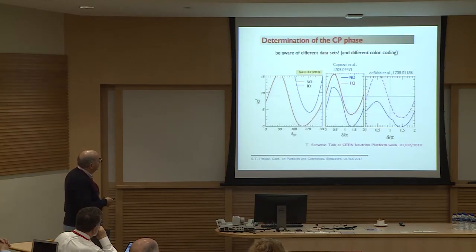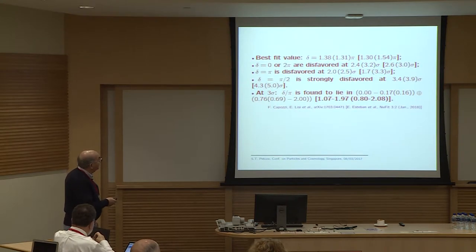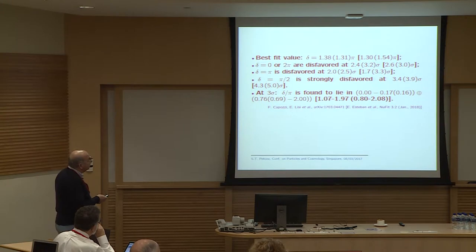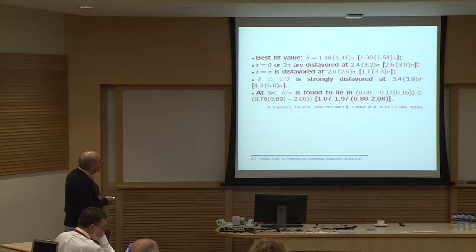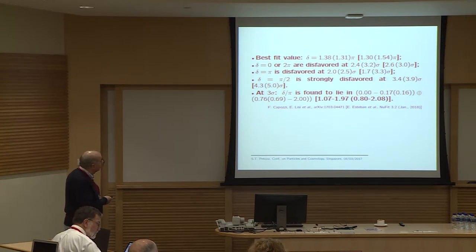The hint about δ = 3π/2 is shown in a chi-square analysis of existing data versus δ_CP. The best fit value for normal ordering is 1.3π, and for inverted ordering is 1.5π. δ = 0 is disfavored at about 2.6 and 3σ confidence level. π is disfavored at about 1.7 and 3.3σ, meaning CP conservation is disfavored in the lepton sector. δ = π/2 is basically ruled out; at 3σ, δ lies roughly in the interval between π and 2π.